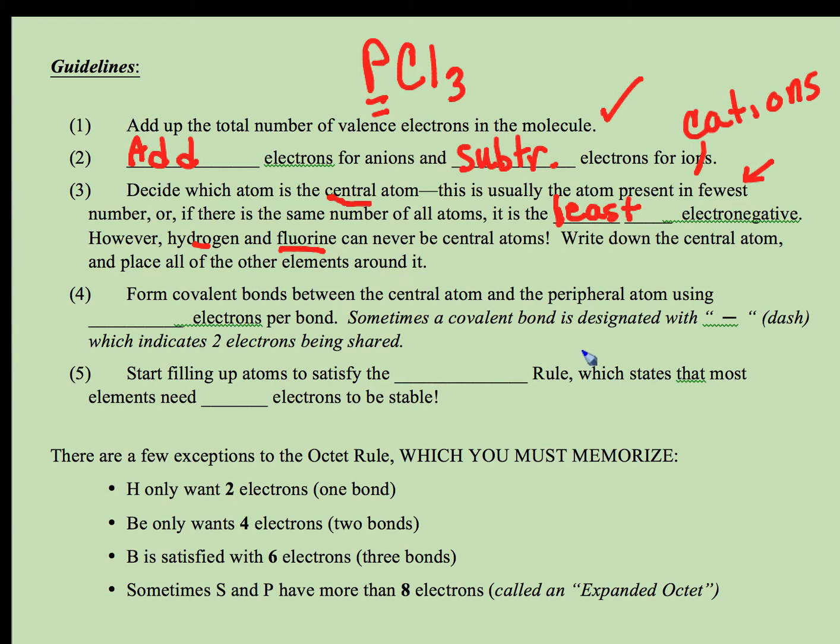Then we're going to form covalent bonds between the central atom and any peripheral atom. It takes two electrons to form a bond, and you can either use a dash for those bonds or you can use two electrons to show it. Don't use both. I'll show you in a minute what I mean by that.